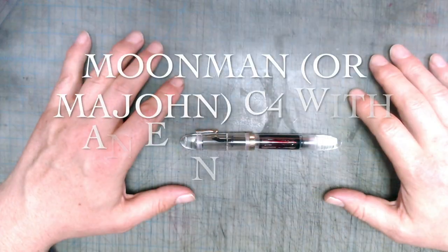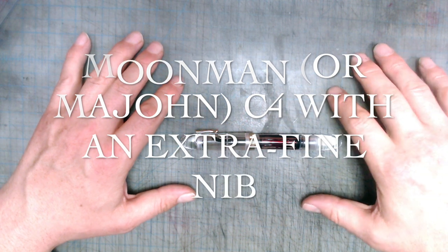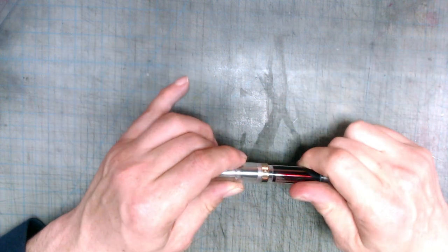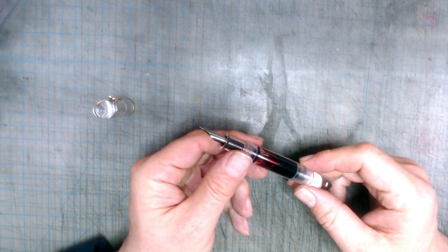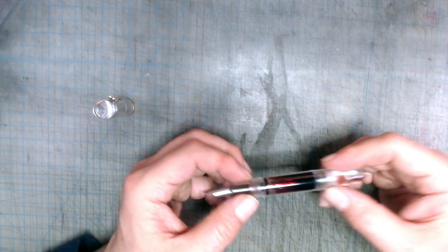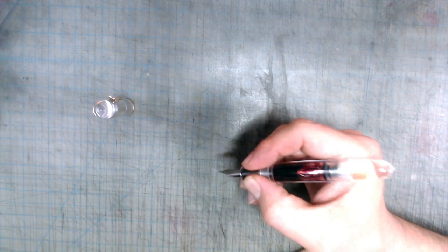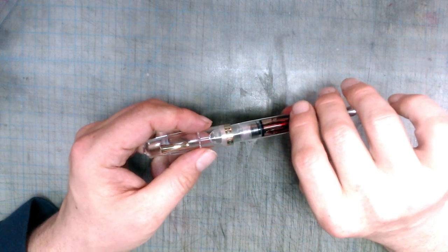Let's get started with the Moonman C4. And here it is. This is a long, chunky pen, capped measuring almost six inches, but because the cap is enormous, it becomes more normal-sized uncapped at a little bit over five inches. The pen body, besides the piston rod, is almost entirely plastic, so despite the large size, the pen is quite light. It doesn't post, but is comfortable enough to be used unposted.